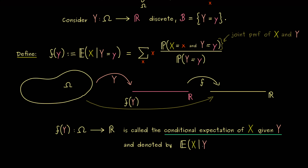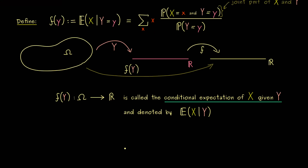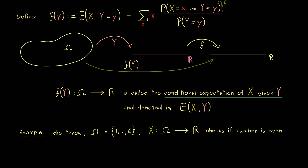Please don't forget: E[X|Y] is not a real number — it denotes a new random variable. To see that, let's consider an example. We look at a discrete case — throwing a die is always a good model. The random variable X checks whether the number thrown is even.